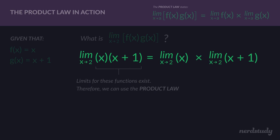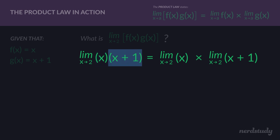So what did the product law say? It says you can take the limit of just the first part and multiply it with the limit of just the second part. So we get the limit of x as x approaches 2, multiplied by the limit of x plus 1 as x approaches 2.